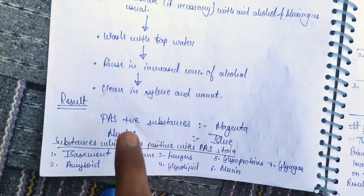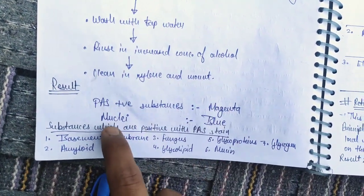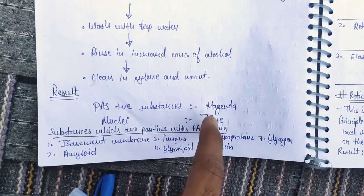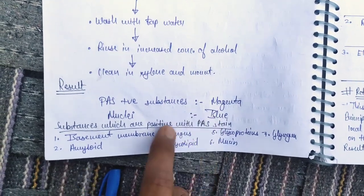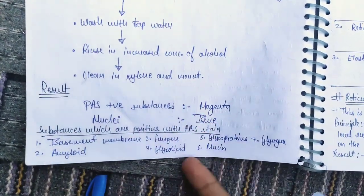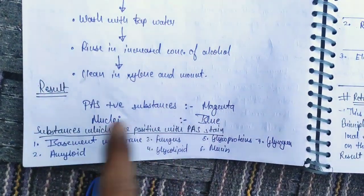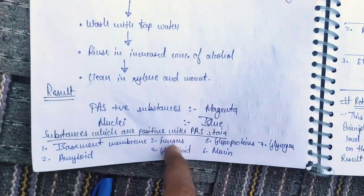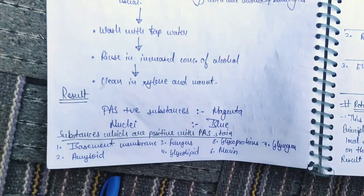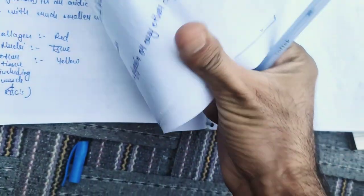Then wash, increase the concentration of alcohol, then clear and mount with xylene. If positive, it will give magenta color. The nuclei will give blue color. Positive results show fungi, glycoprotein, glycogen, and glycogen-related structures. This is our special stain.